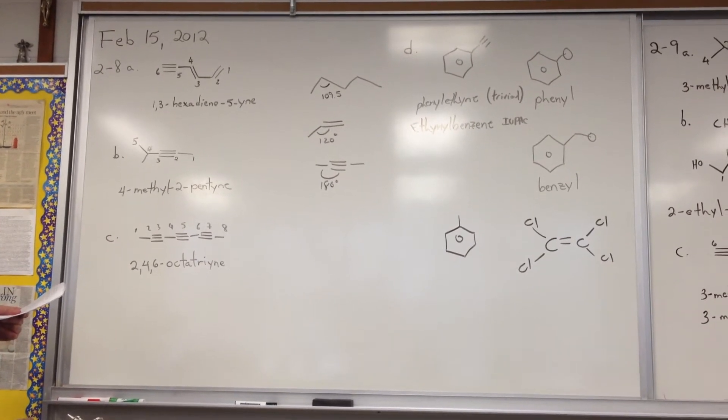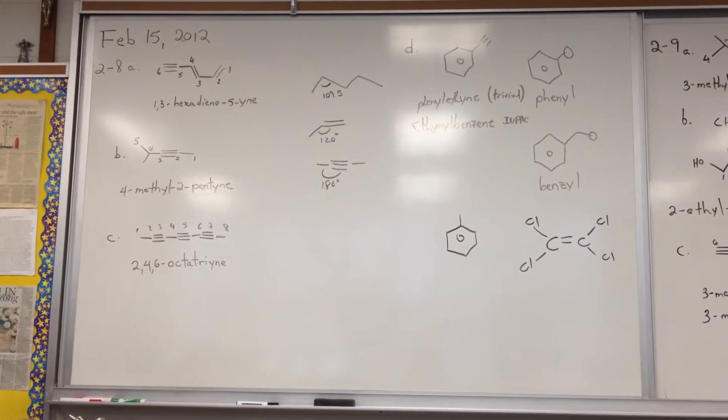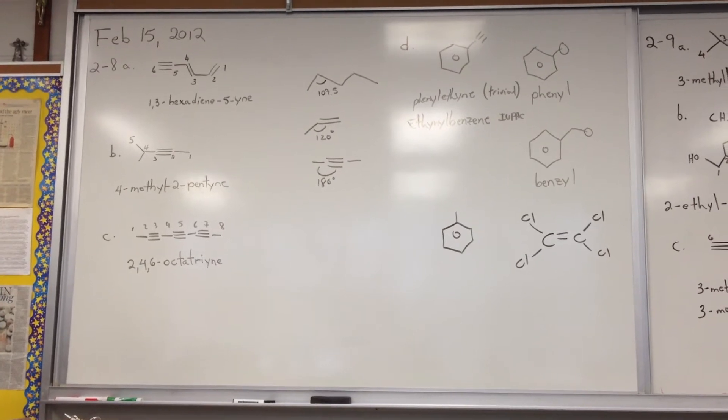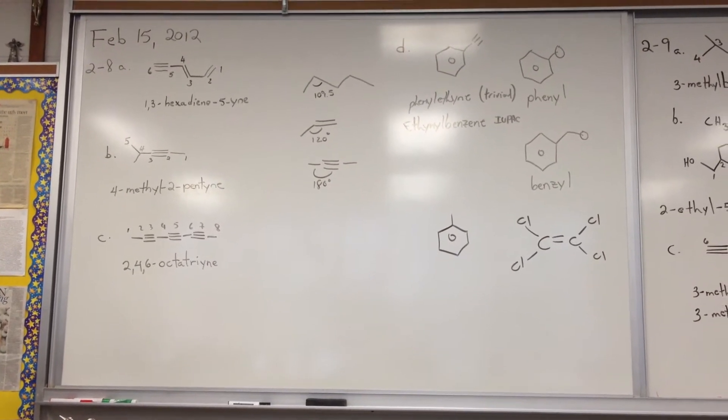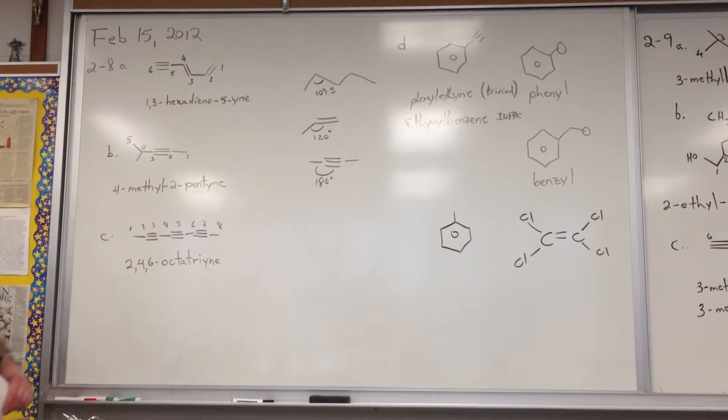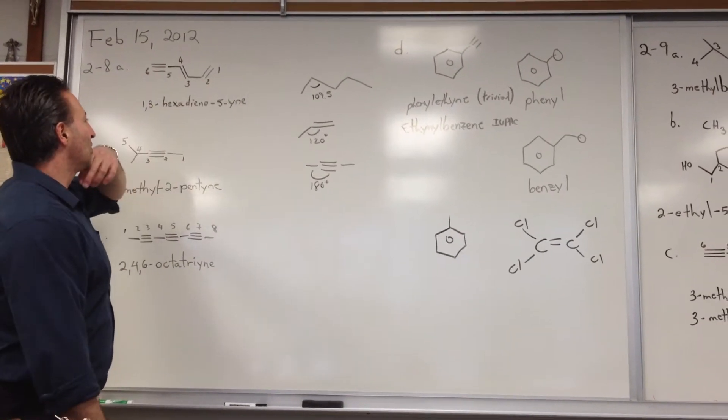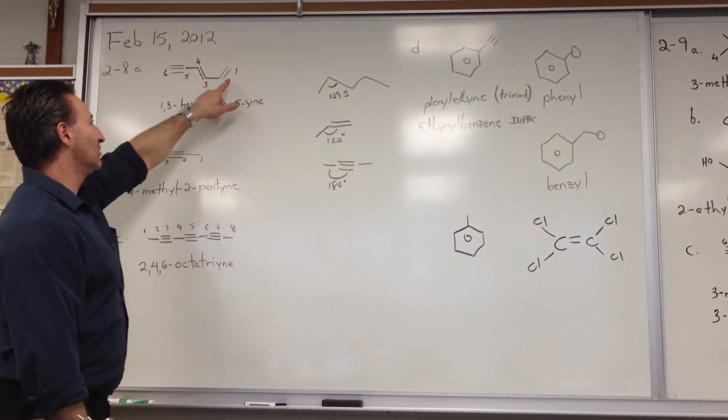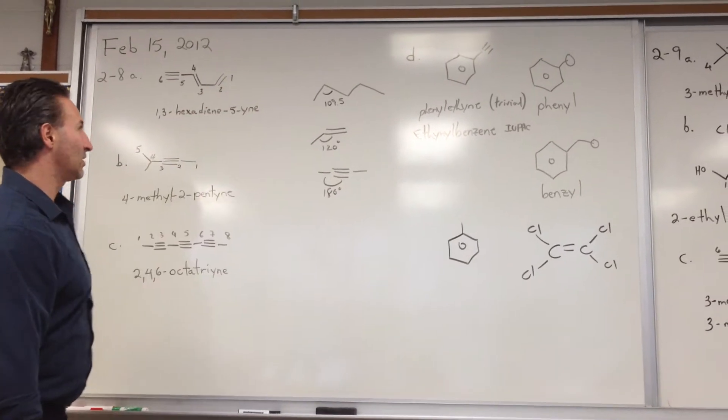If you have both an alkene and an alkyne in the same molecule, for example as we have here, they're both on the terminal ends, you will give precedence to the alkene. So you start the numbering from the side of the alkene.